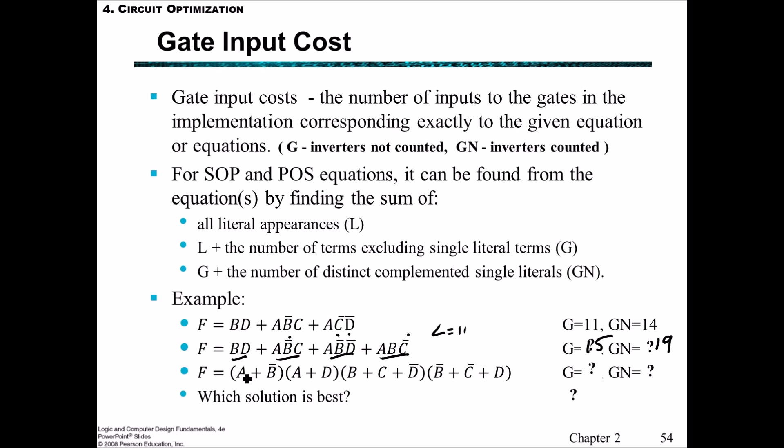And for the last example, we have number of literals being ten. And the number of terms that are not single literals is ten plus four, so fourteen. And including the complemented single literals, that's another four, giving a total of eighteen. So then which solution is best? Well, clearly the first one is best both in terms of G, the gate input count, and also GN.